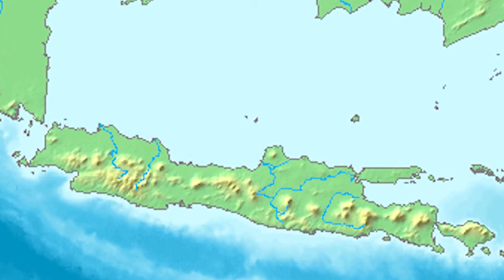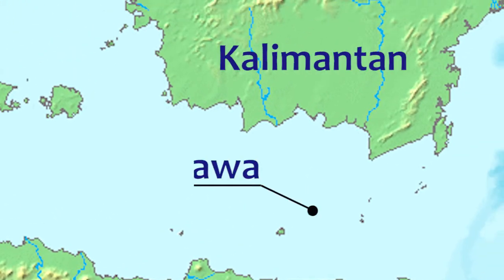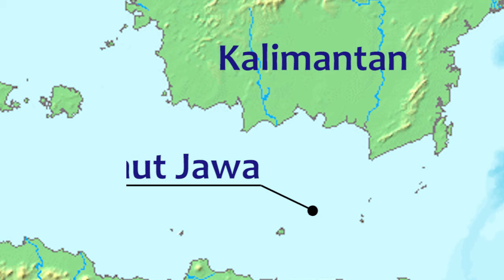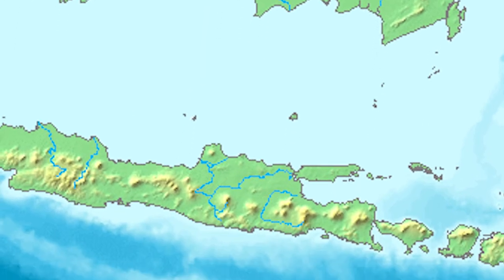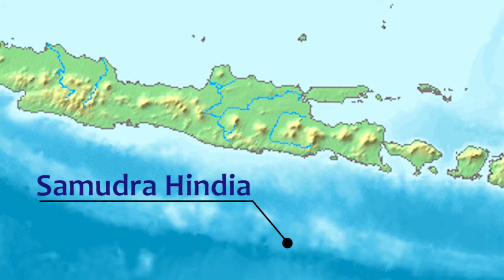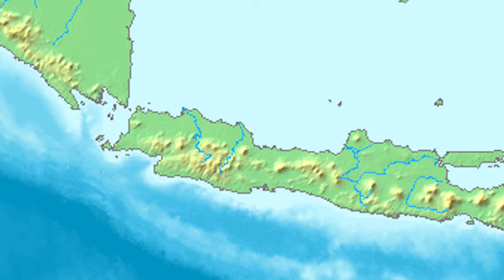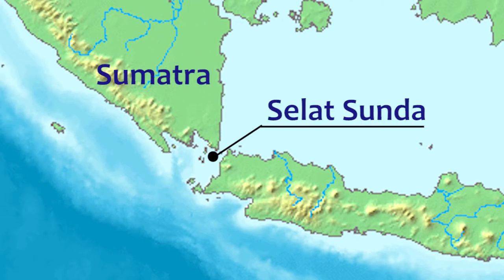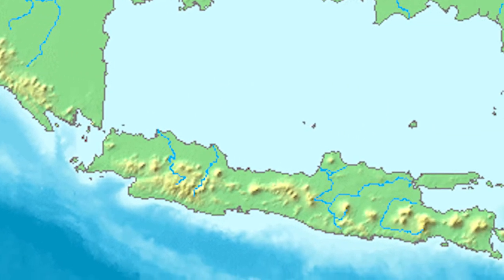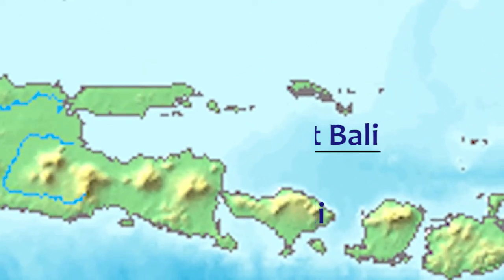Batas-batas Pulau Jawa: Utara: Laut Jawa dan Pulau Kalimantan. Selatan: Samudera Hindia. Barat: Selat Sunda dan Pulau Sumatra. Timur: Selat Bali dan Pulau Bali.